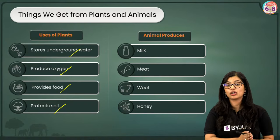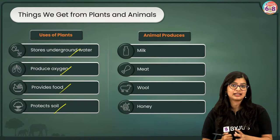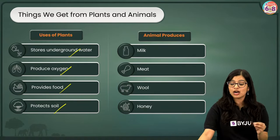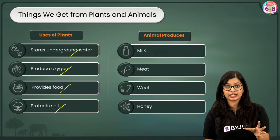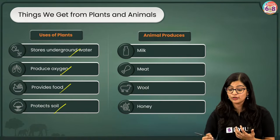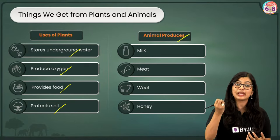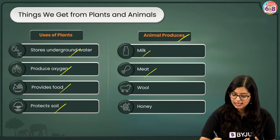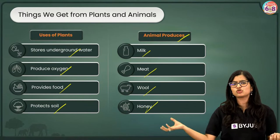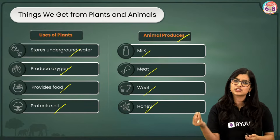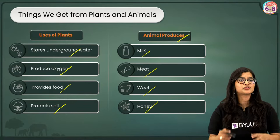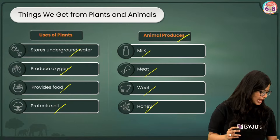Plants produce oxygen and provide food. Importantly, trees also protect the soil — their roots hold and bind the soil, preventing soil erosion. Trees also store underground water. Various animals live in the forest and in natural vegetation. Apart from just being there, animals are helpful because we get animal-based products such as milk, meat, wool, and honey.